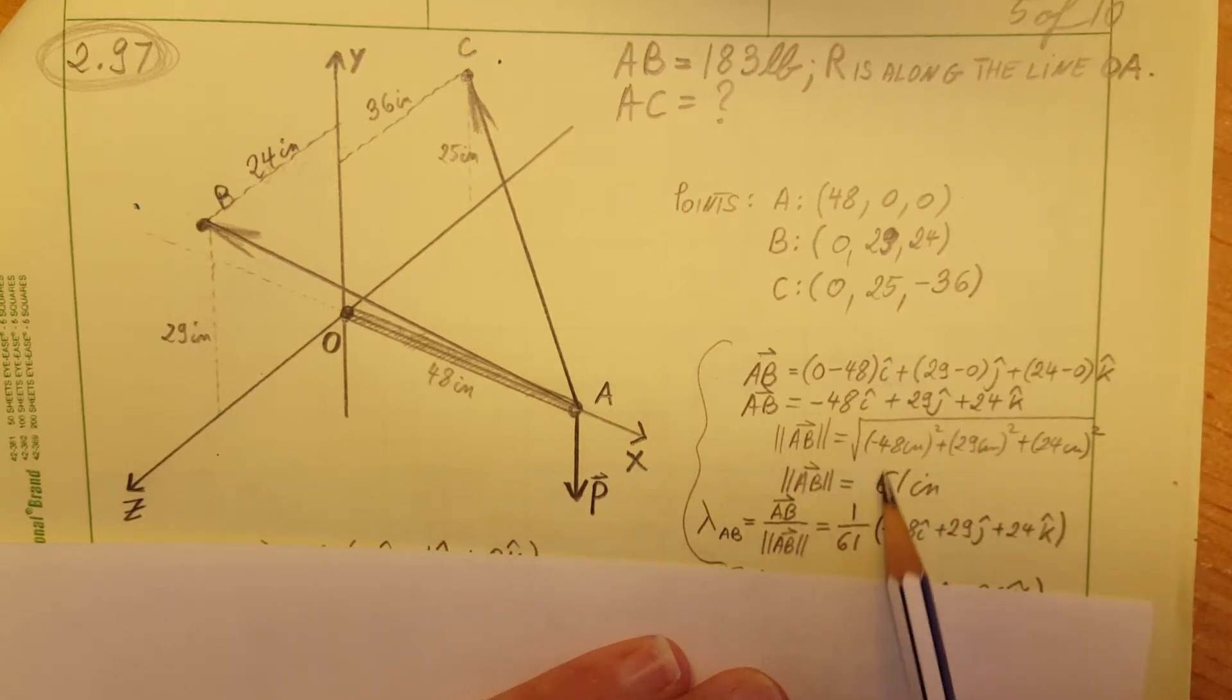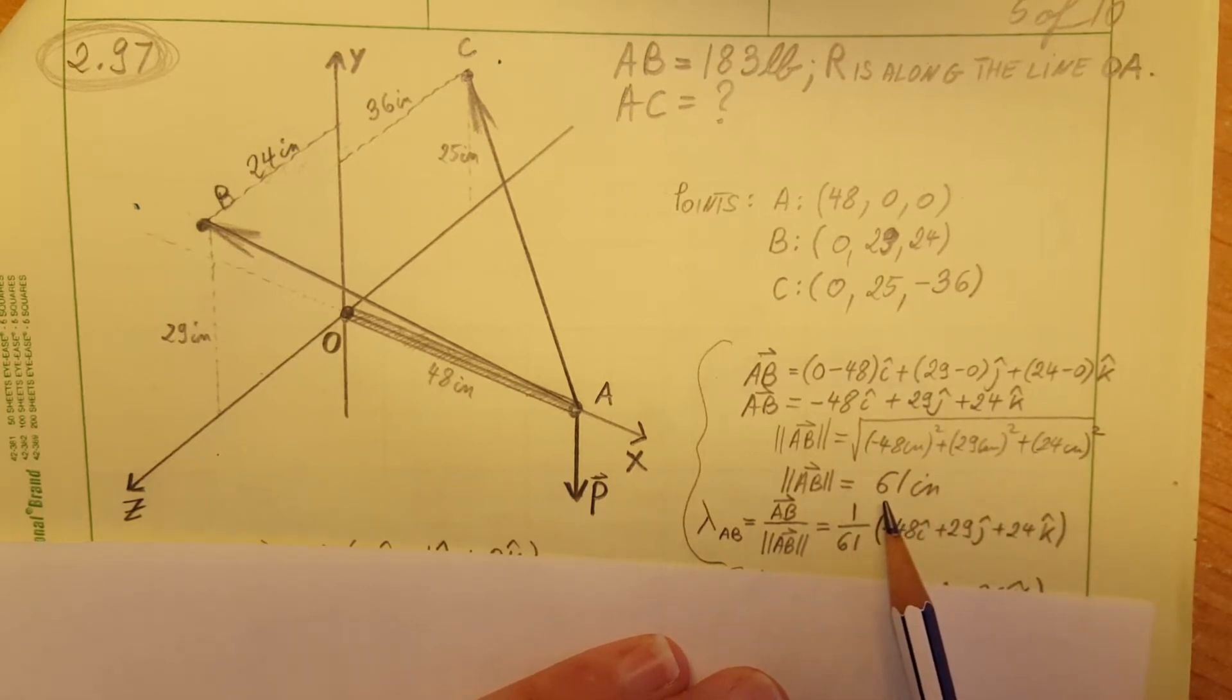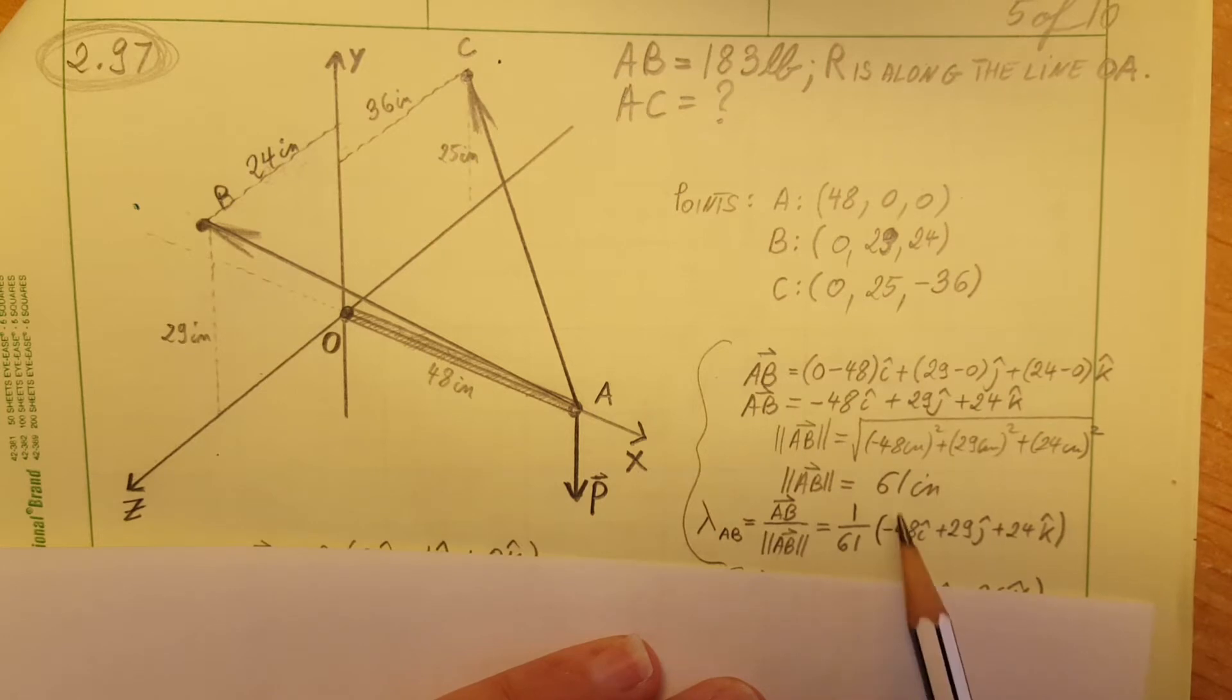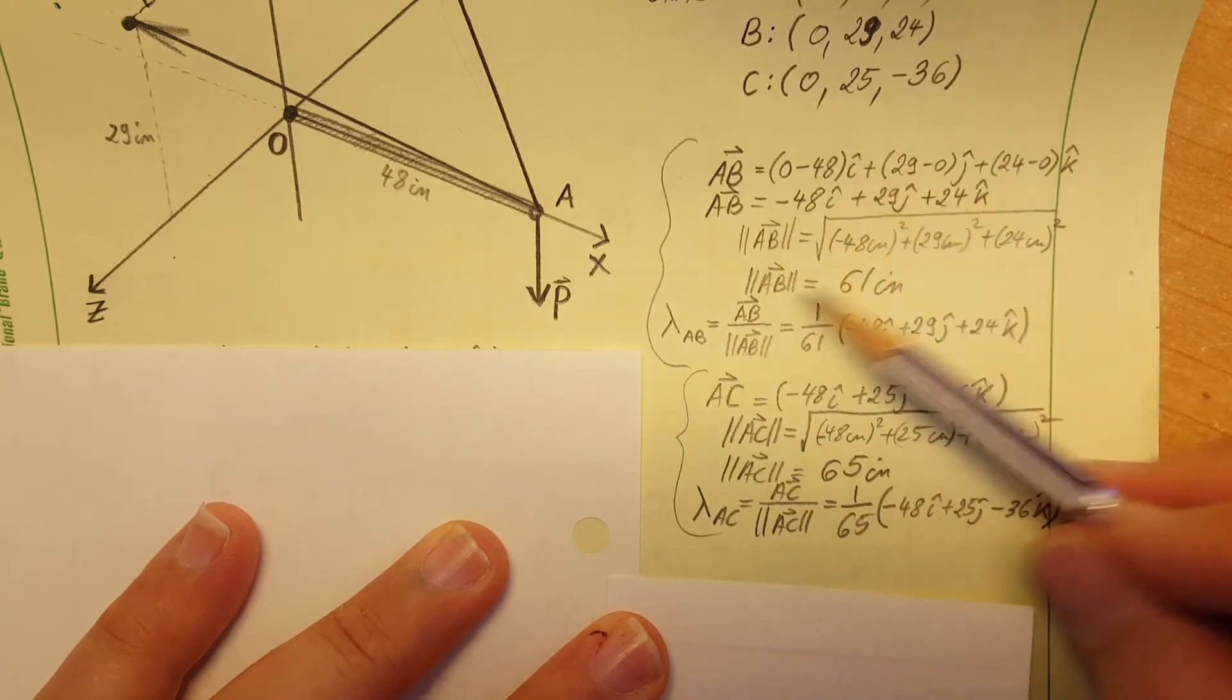Then we're gonna find our magnitude: square root of 48 squared plus 29 squared from here and 24 squared from here. We're gonna get a value of 61 inches for this. Then the unit vector equals the position vector over magnitude. Therefore, we're gonna plug it in: our position vector goes on top and divide it by 61, which is our magnitude. I just pulled it out in front: 1 over 61 times the position vector.